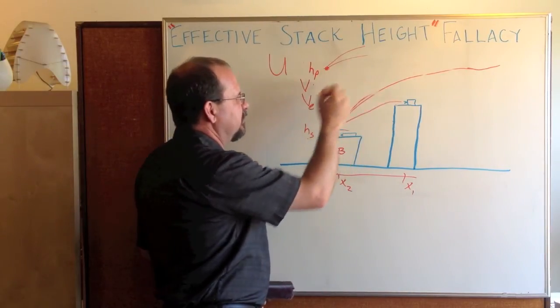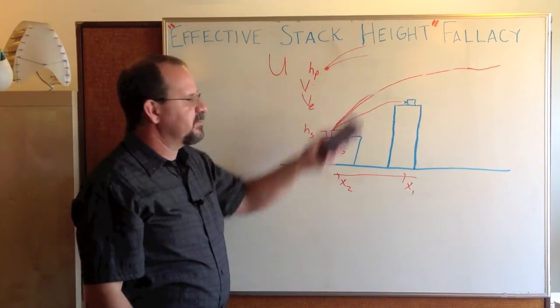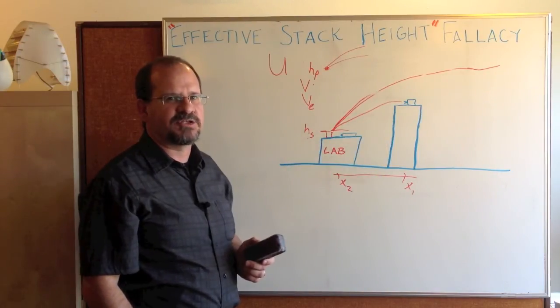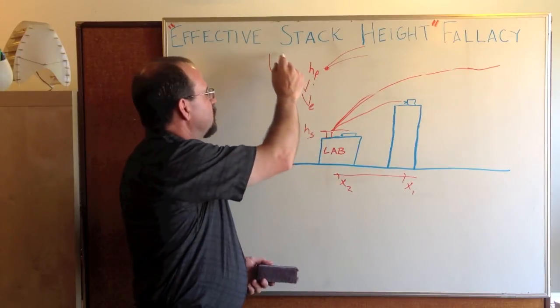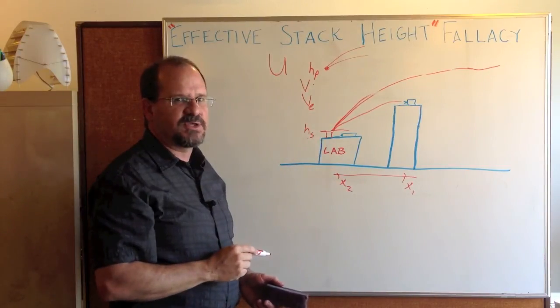For an intermediate wind speed, you'll end up with some intermediate plume rise. It could be a problem at a neighbor's air intake or a high air intake on your building. So you look at a whole range of wind speeds.